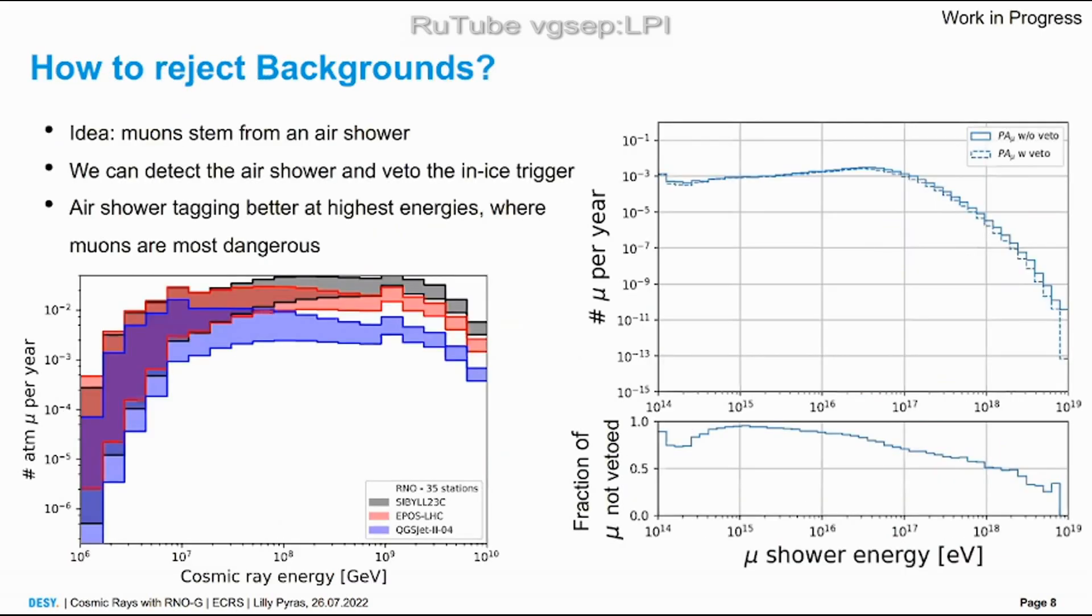These huge uncertainties lead us to a mitigation strategy. In this case we have the advantage that muons stem from an air shower, so the idea is if we measure the air shower we can veto the in-ice trigger. Here's a plot showing the numbers of muons per year and the belonging cosmic ray energy.